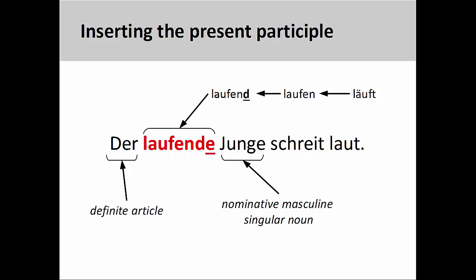When we form an extended modifier, what we are basically doing is inserting the relative clause before the noun it modifies to function as a type of adjective. To form a present participle, you simply take the verb in the relative clause, form its infinitive, and then attach a 'd' suffix to the infinitive. This process creates the present participle 'laufend,' running. When we insert the participle before the noun, it functions as an attributive adjective and needs an adjective ending.